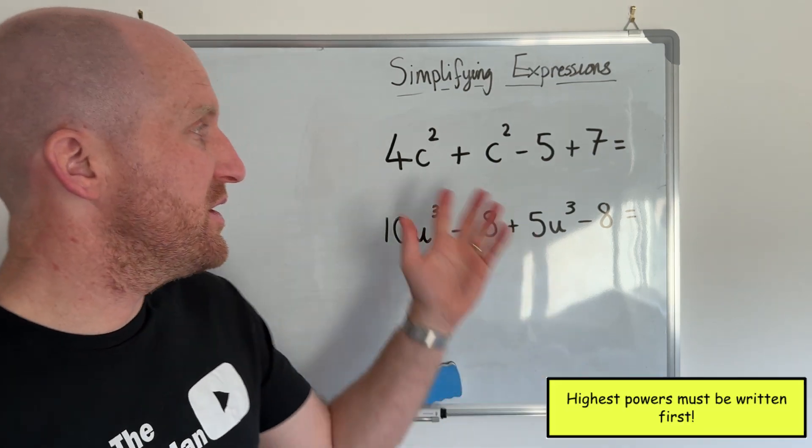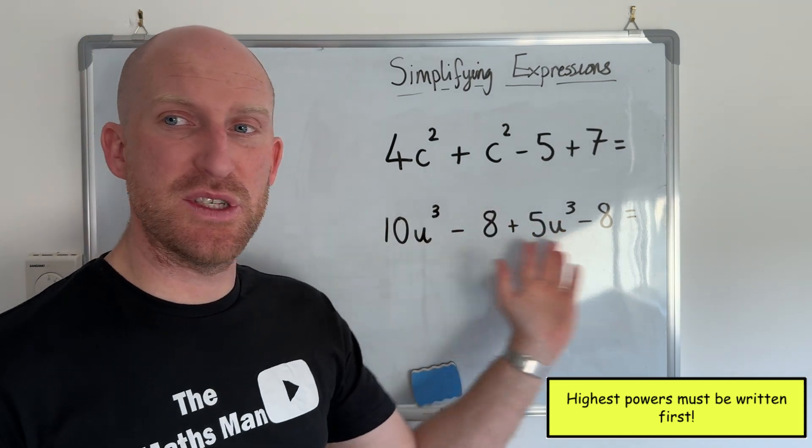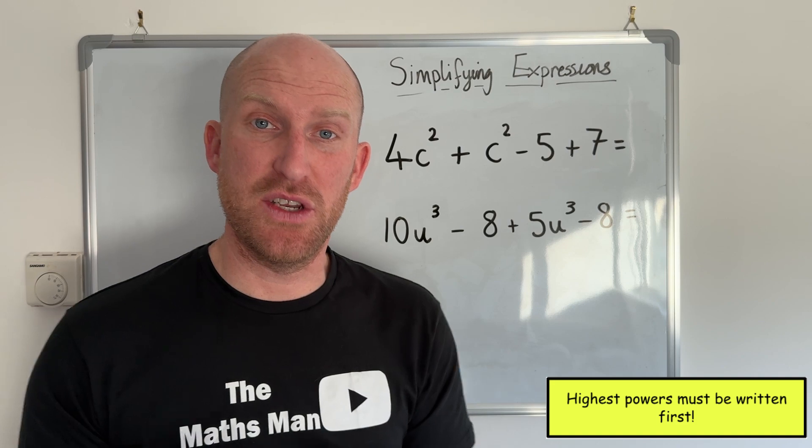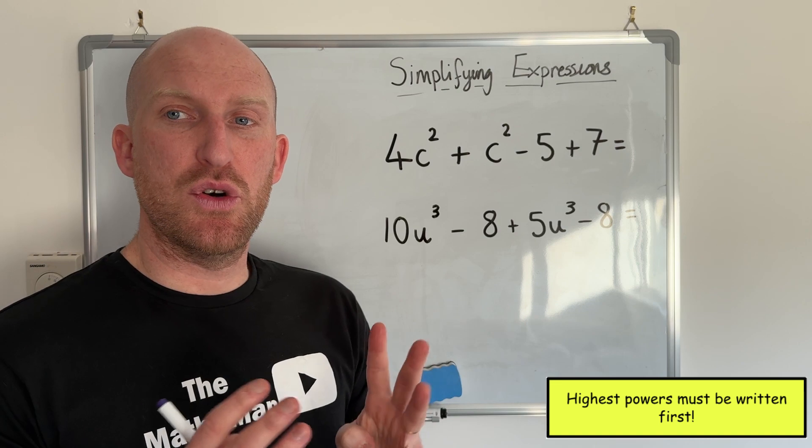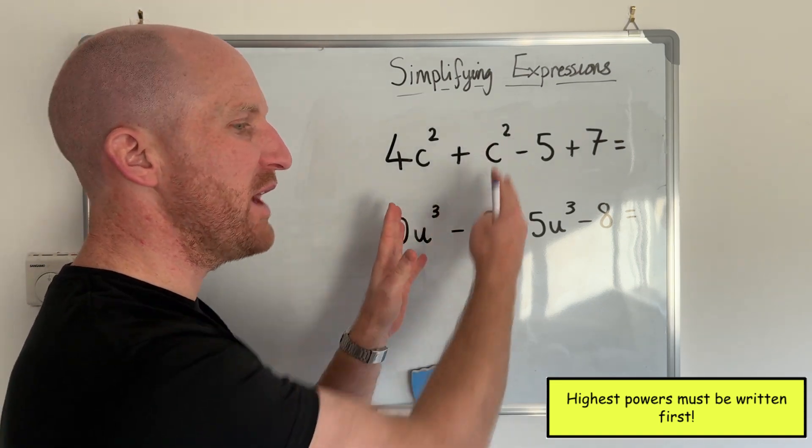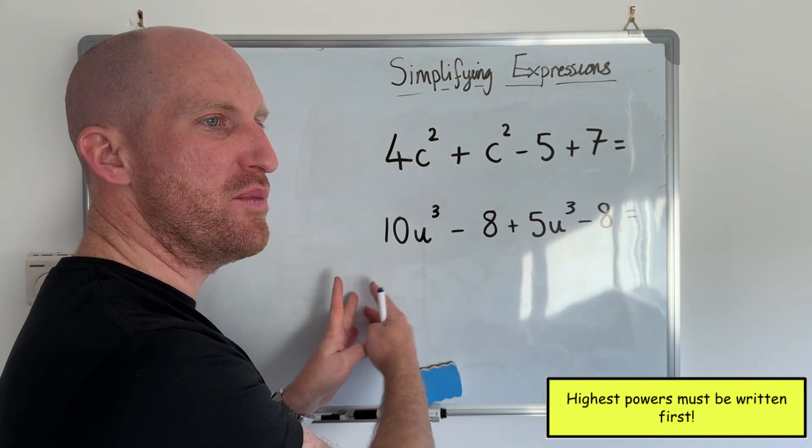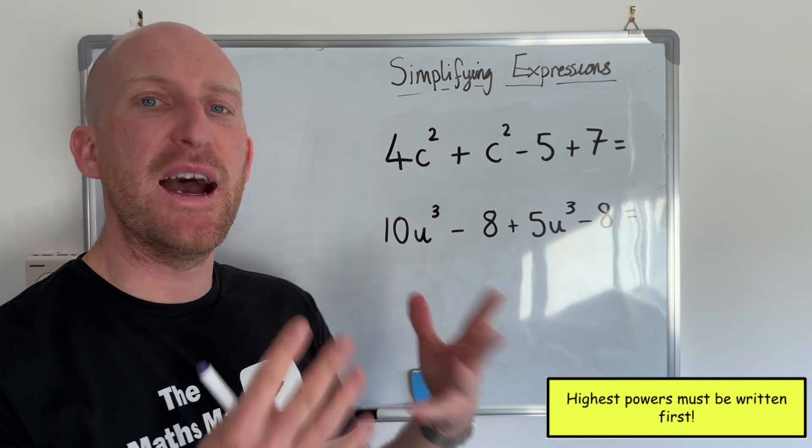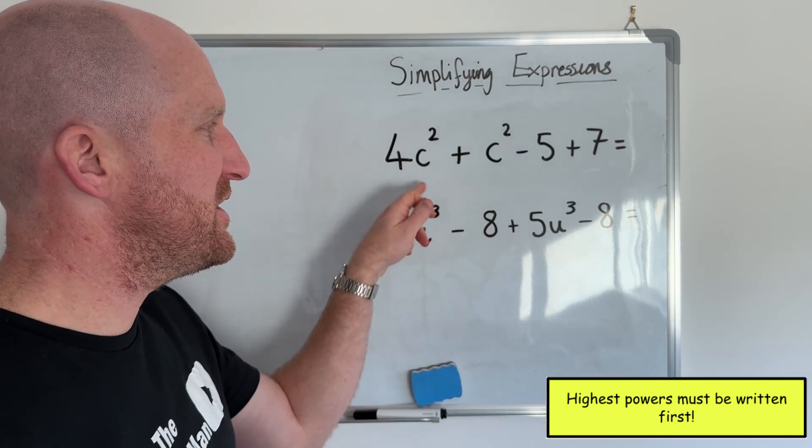So the next stage in simplifying algebraic expressions is the introduction of powers. So in this first example I've got squared numbers and then I've got cube numbers in this next question here. Now the next rule that we need to learn is that when you have questions like this we must write the powers, the highest power first. So if we have a question which we will do next where we have squared and cubed numbers, the cube number would be written first in the answer and then the squared number because cubed is a higher power than the squared number. But anyway, before we get to that stage let's just complete these two.